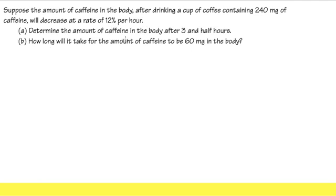First, we are going to determine the amount of caffeine in the body after three and a half hours. Well, remember here we have a percentage change. So this is the formula that we are going to use. We are going to use Q for the quantity, and that's equal to a times 1 plus r raised to the t's power.